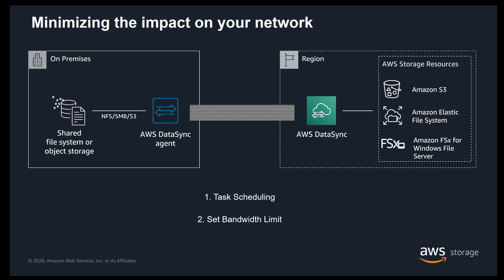You can now modify the bandwidth limit while a DataSync task is running. Let's look at two scenarios in which this feature will add value to our customers. Let's assume we have a 100 megabit connection. A DataSync task is configured to execute at 7pm and use all available bandwidth. But the task continues to run into the next day, and by morning you want to limit the bandwidth used by DataSync to ensure that end users are not impacted. With this new DataSync feature, we can edit the running task and set a bandwidth limit, let's say 20 megabytes per second, allowing the DataSync task to continue running while freeing up bandwidth for other network services.